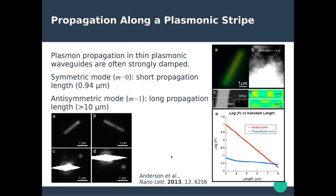Another type of plasmonic waveguide is a plasmonic stripe. The plasmons propagating along these stripes are typically very damped. Because of the symmetries, you have a symmetric mode where both sides are in phase — positive and negative charges on both sides — or an anti-symmetric mode where the upper and lower surfaces exhibit out-of-phase oscillations. The symmetric modes have a fairly short propagation length of the order of a micrometer, while the anti-symmetric mode shows much longer propagation, about tenfold.